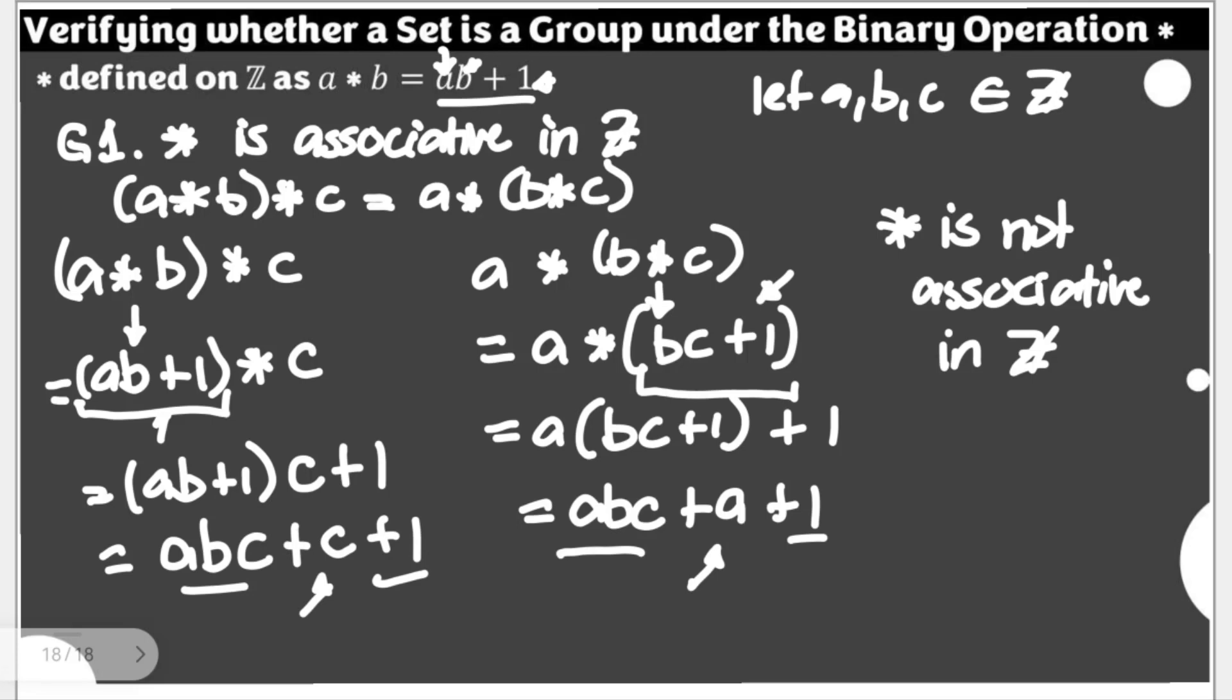With this, there's no need for us to go to G2 nor G3. For those of you who would like to know what's G2 and G3, G2 is the determination of the identity element for the said set using the operation. And G3 is the existence of inverse element for all elements in Z under the given operation.